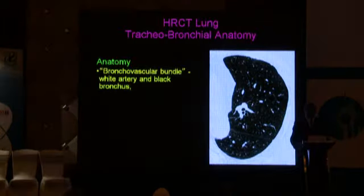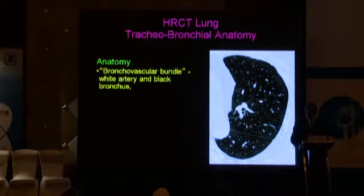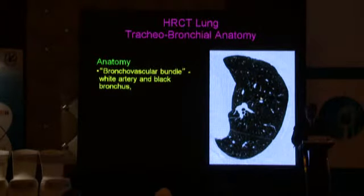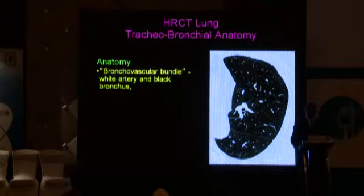We also need to see the extent of small airways disease or constrictive bronchiolitis along with the bronchiectasis that then affects the functional outcome of the pathology. So how do we diagnose bronchiectasis? When we look at an HRCT image, we see the black bronchus and the white artery going together — that's the normal anatomy.